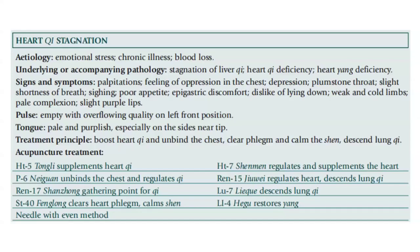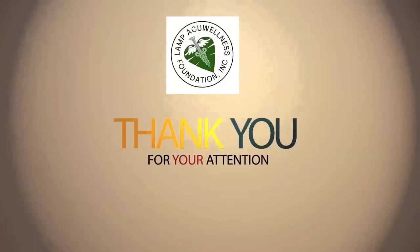The treatment principle is to boost heart qi and unbind the chest, clear phlegm and calm the shen, and descend lung qi. For the acupuncture treatment: Heart 9 supplements heart qi; Pericardium 6 unbinds the chest and regulates the qi; Ren 17 is the gathering point for qi; Stomach 40 clears heart phlegm and calms the shen; Heart 7 regulates and supplements the heart; Ren 15 regulates the heart; Lung 7 descends lung qi; LI 4 restores yang. Use an even reinforcing-reducing method.